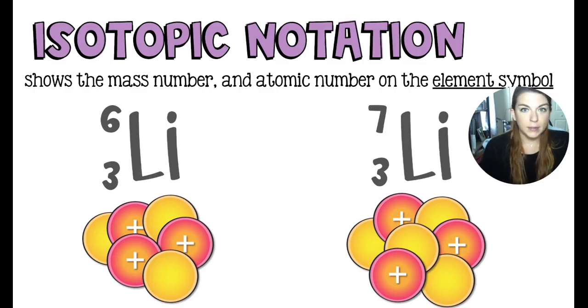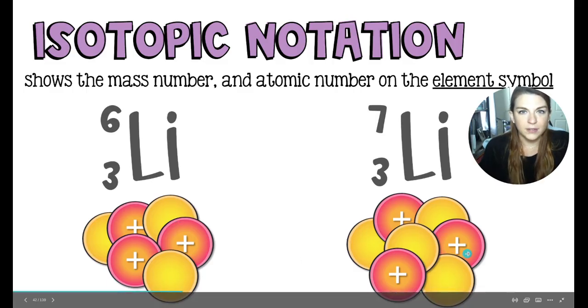because the atomic number is the number of protons, which for lithium is three. This number on top represents everything in the nucleus, the number of things in the nucleus. That's the sum of the protons and the neutrons, which is how here we have six, and over here we have seven.